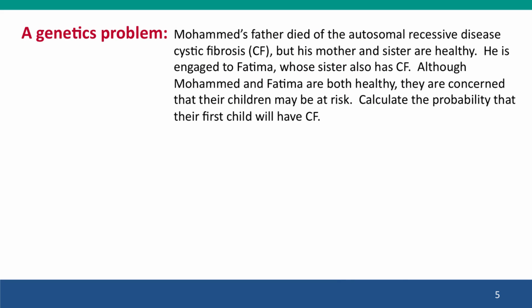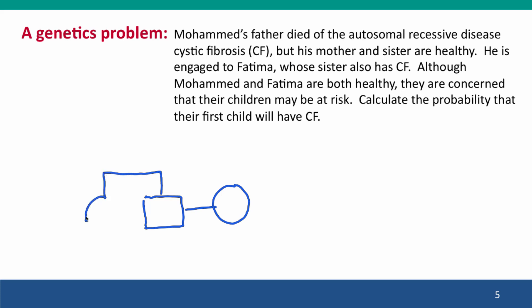Here's a relatively simple genetics problem, and I'm going to draw it to let you see how a wordy problem can be translated into a diagram that summarizes all of the information. In this problem, we're mainly concerned with a man named Mohammed and his fiancée Fatima — they're not actually married yet. We're told that Mohammed's father died of cystic fibrosis, but his mother and sisters are healthy. So there's Mohammed, there's his sister, here are his parents — there's his mother and there's his father.